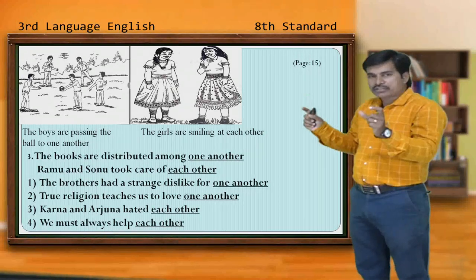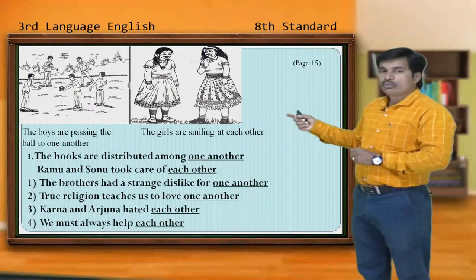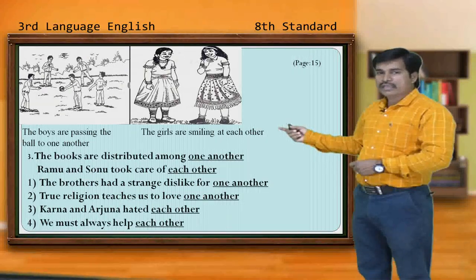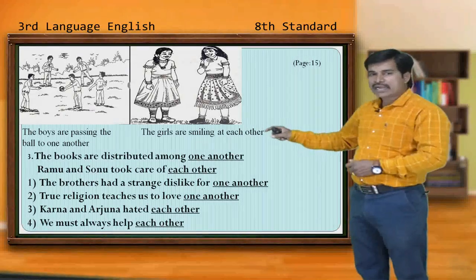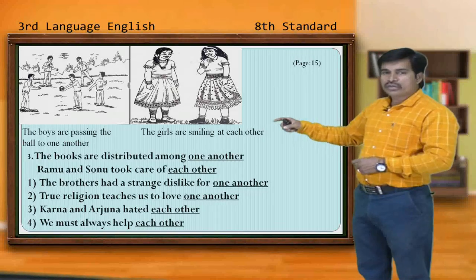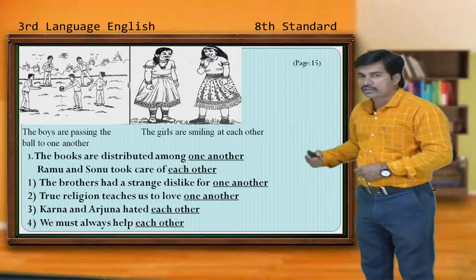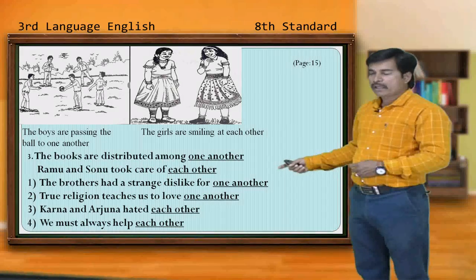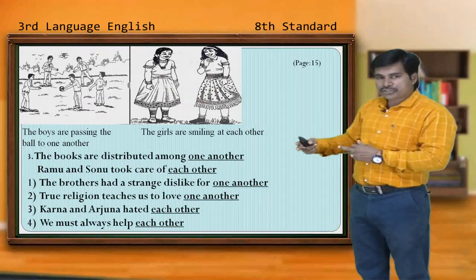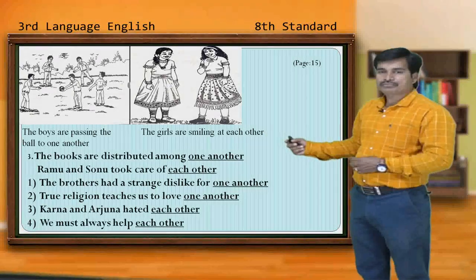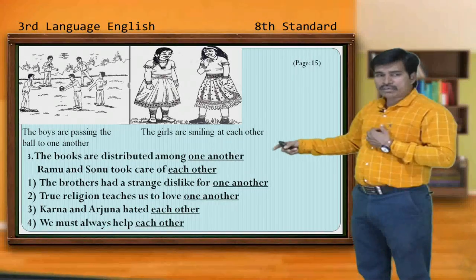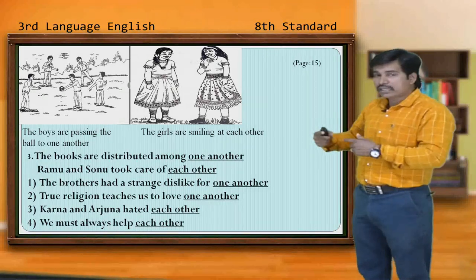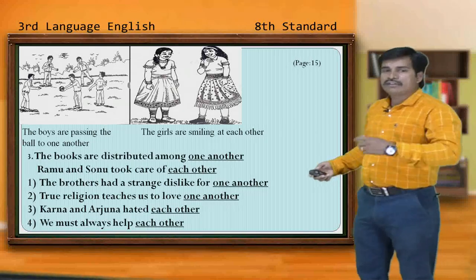In page number 15 they have given some pictures. Observe these pictures and write 'one another' or 'each other.' Examples: The books are distributed among one another. Ramu and Sonu took care of each other. The brothers had a strong dislike for one another. True religion teaches us to love one another. Karan and Arjun hated each other. We must always help each other. When there are two persons or two things, we use 'each other.'